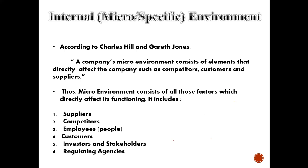Let's zoom into the internal environment. According to Charles Hill and Gary Jones, a company's micro environment consists of elements that directly affect the company, such as competitors, customers, and suppliers. The key word here is 'directly affects.' The micro environment consists of all those factors which directly affect the business's functioning, operations, or activities. These factors include suppliers, competitors, employees, customers, investors, stakeholders, regulating agencies, and so on.